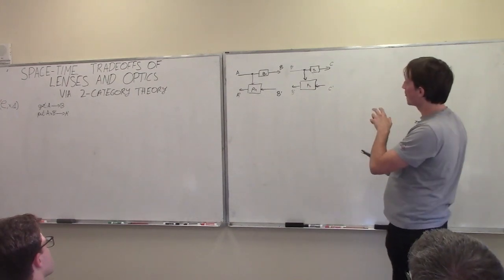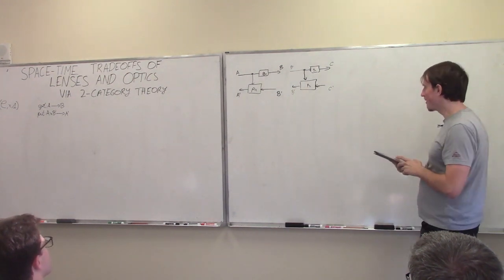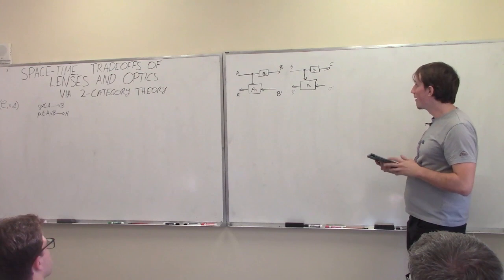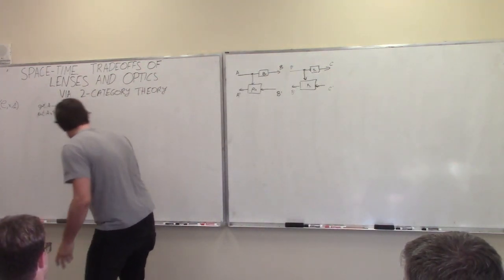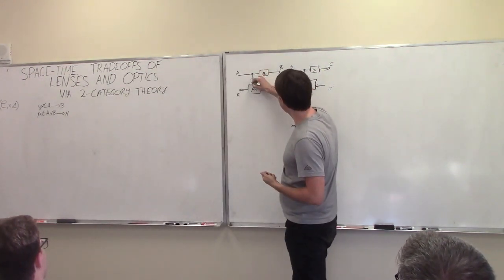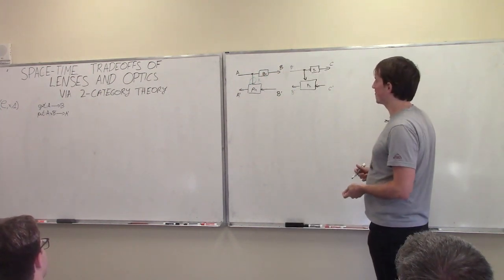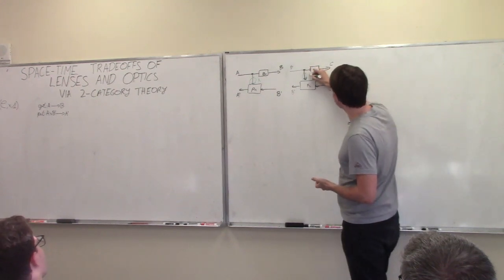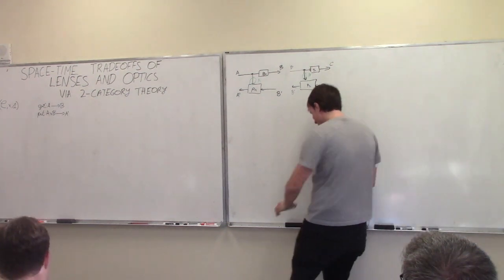You might want to think about how you would compose these lenses — it's a trick question. Before I say anything more, I'll note that a lens has this thing called the internal state. It's sort of this wire here, and it's always of type A. It doesn't really seem like something we even want to make explicit data. And here it is always going to be equal to B. How do we hook up these lenses? How do we compose them?